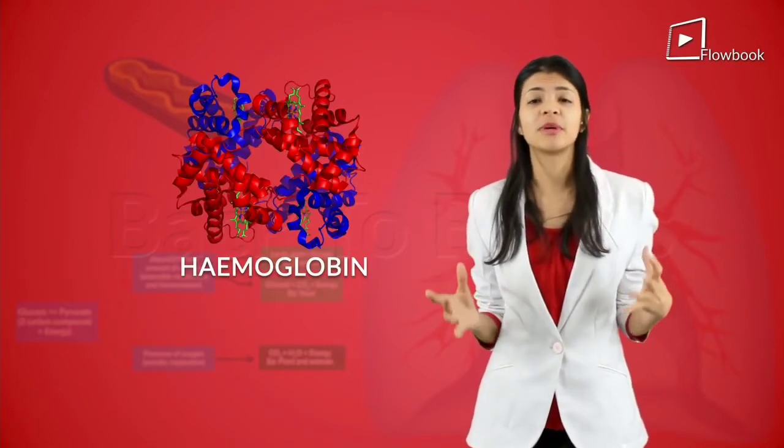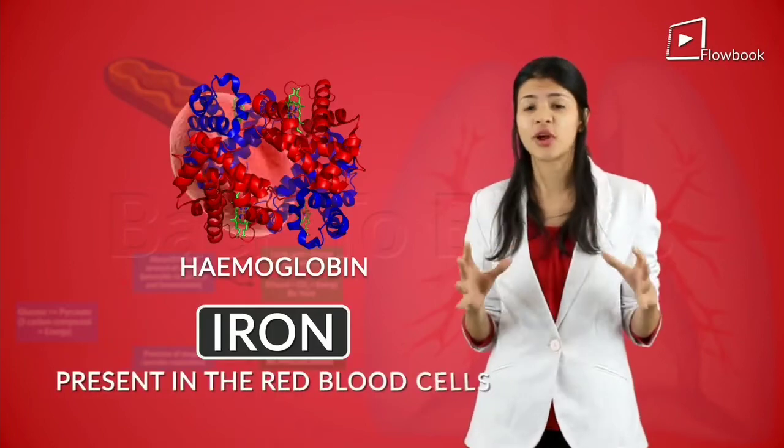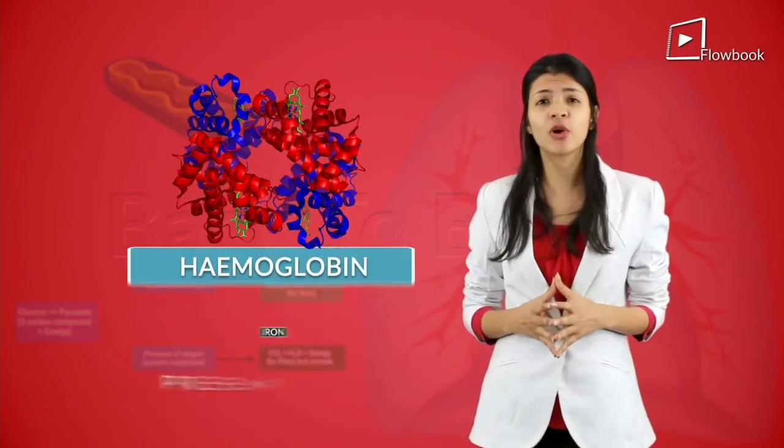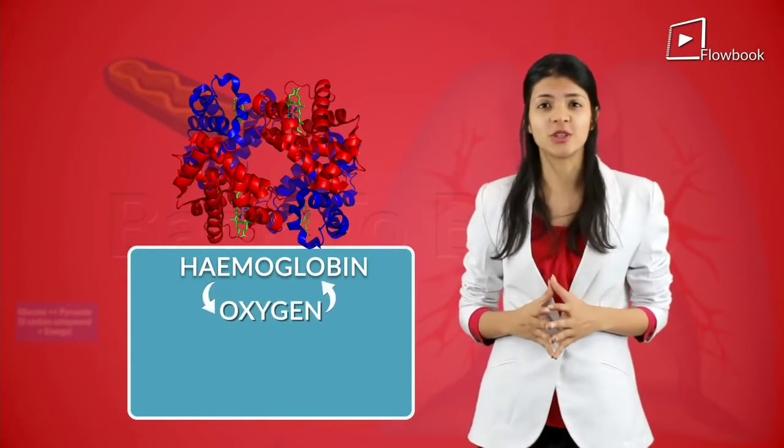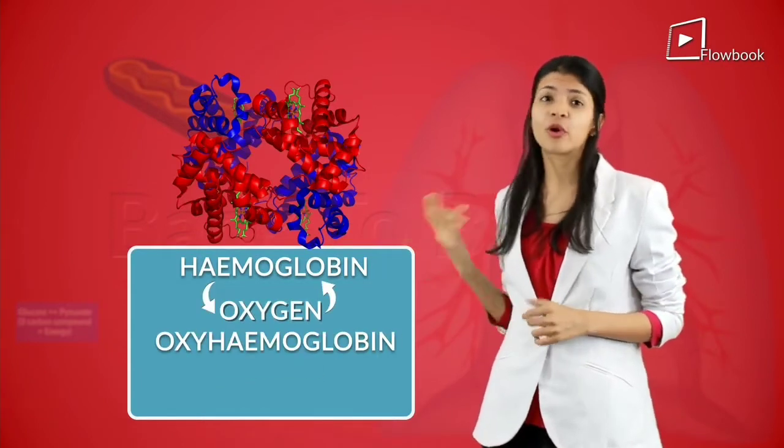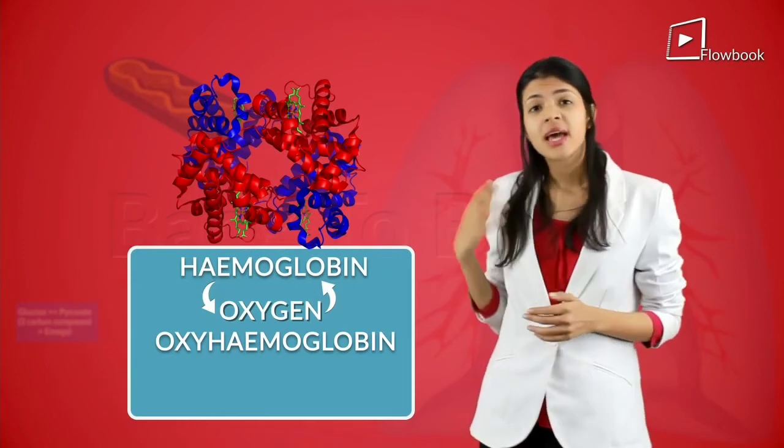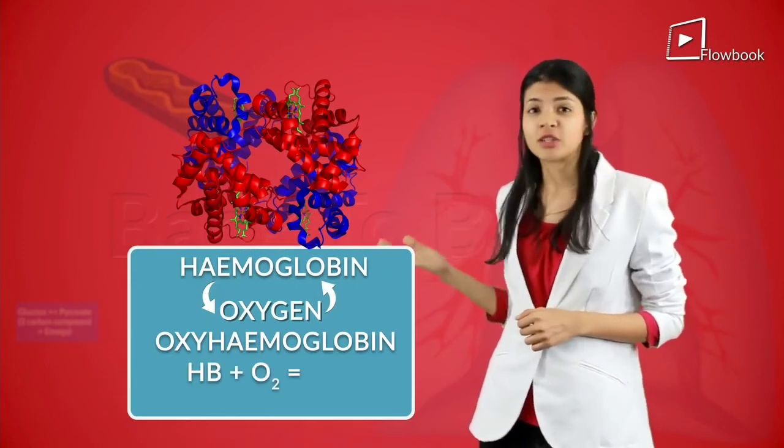Hemoglobin is a protein which is made up of iron and is present in the red blood cells. And hemoglobin loves oxygen. It combines with oxygen to form oxyhemoglobin which is Hb plus O2 gives HbO2.